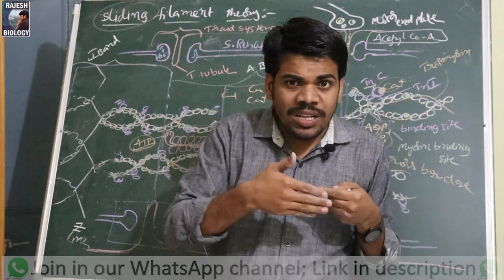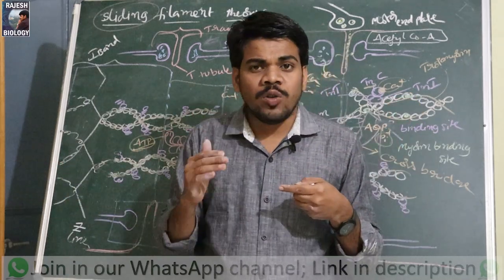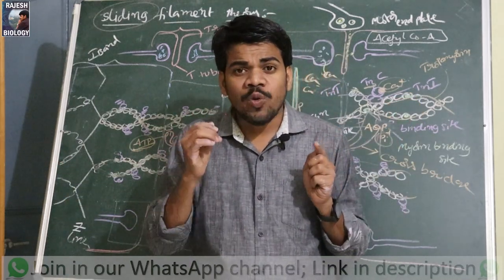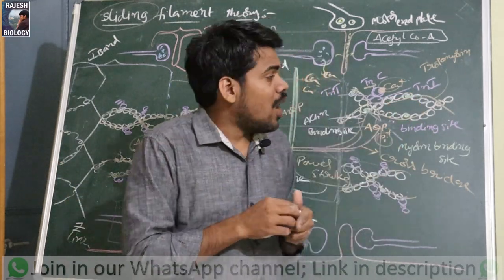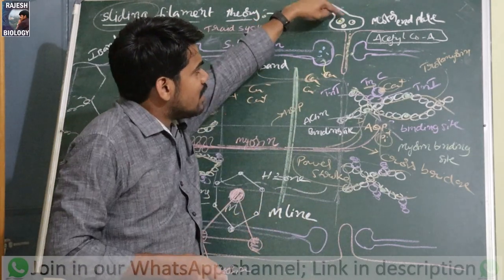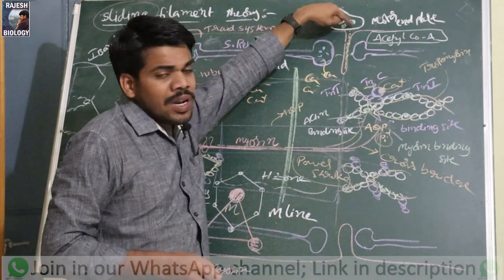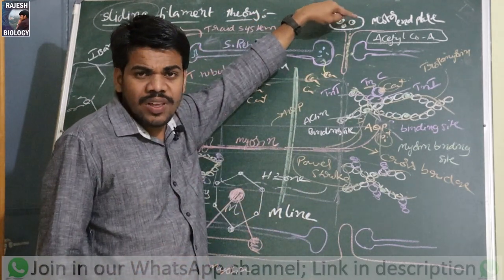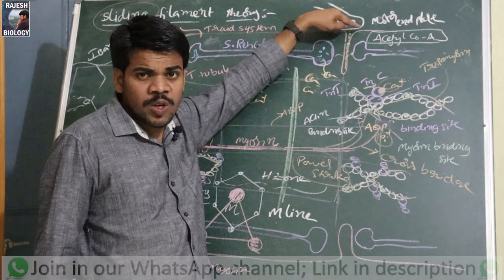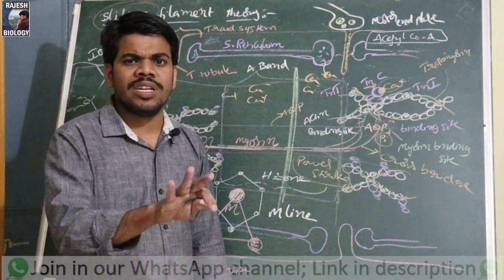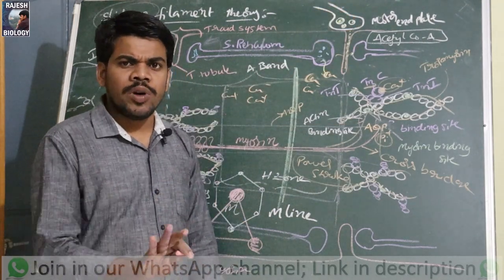The actin filaments slide past the myosin continuously, and this process continues as long as nerve impulses are being sent. If the nerve impulses are stopped, the process stops. Up to that point, this is sufficient for full marks in an exam.